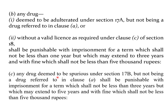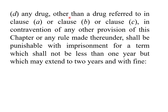The penalty for manufacture or sale of a drug deemed adulterated, or manufacture or sale without a valid license, is imprisonment for a term not less than 1 year but which may extend up to 3 years, and a fine not less than 5,000 rupees. Any drug deemed spurious shall attract imprisonment not less than 3 years but extending up to 5 years with a fine not less than 5,000 rupees. Any other offence committed with respect to a drug is punishable with imprisonment not less than 1 year but extending up to 2 years, and a fine.